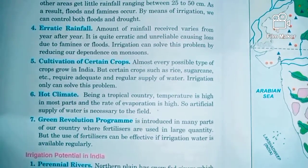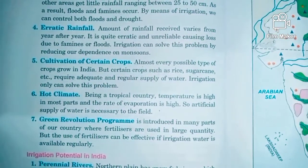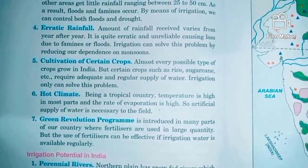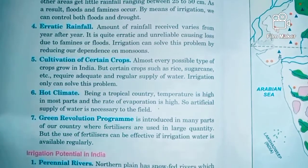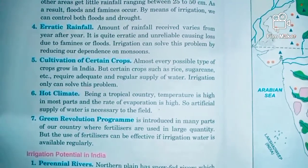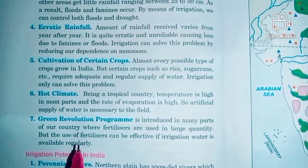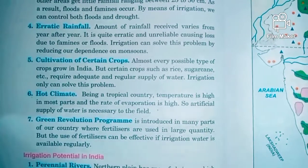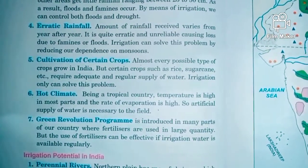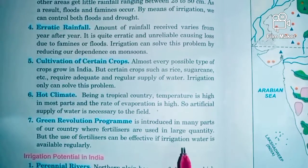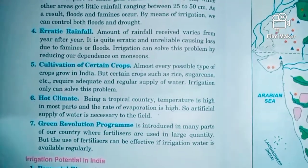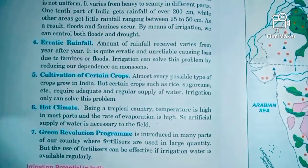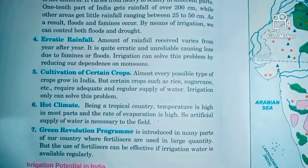The next reason is the Green Revolution program. In many parts of the country, Green Revolution programs have been initiated and fertilizers are widely used. In order to use fertilizers effectively in the land, water must be provided regularly to the field. If this is done, the program can be very successful — so we need irrigation facilities. These are the prominent reasons why irrigation is required in India.